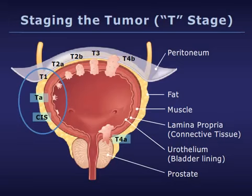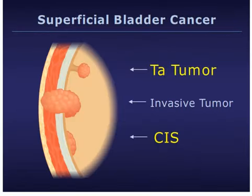In stage Ta bladder cancer, a tumor has formed but the cancer cells are found only on the surface of the urothelium. Stage T1 bladder cancer is sometimes referred to as early invasive or superficially invasive. In this stage, the cancer cells are found deeper in the bladder, in the tissue beneath the bladder lining called the lamina propria.